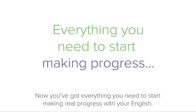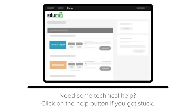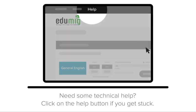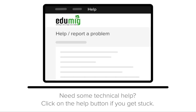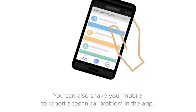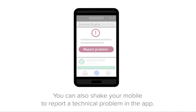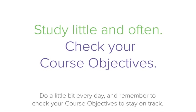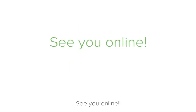Now you've got everything you need to start making real progress with your English. Need some technical help? Click on the Help button if you get stuck. You can also shake your mobile to report a technical problem in the app. Do a little bit every day and remember to check your course objectives to stay on track. See you online!